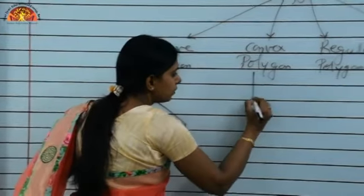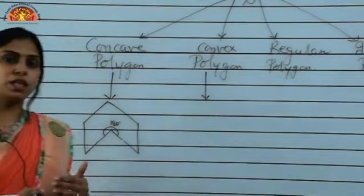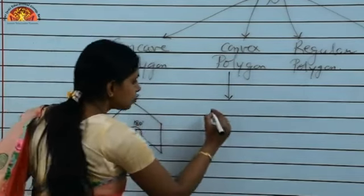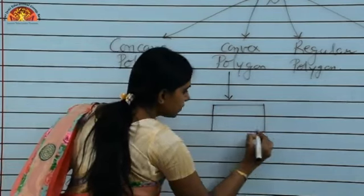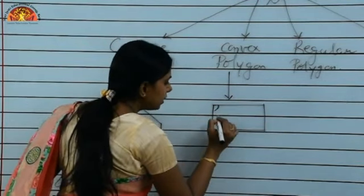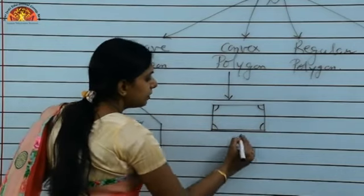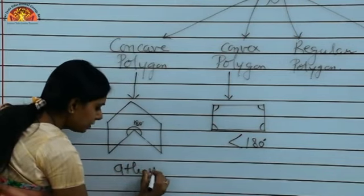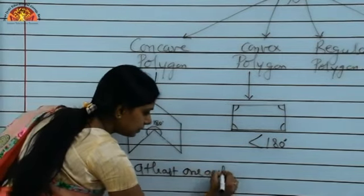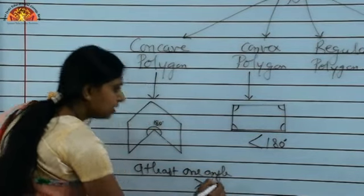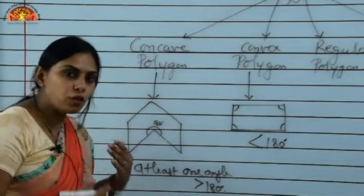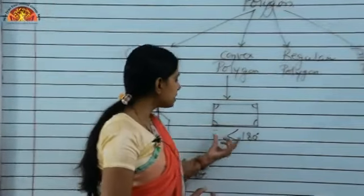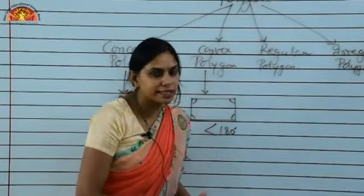Now let us come to the convex polygon. A convex polygon is a polygon in which all the angles are less than 180 degrees. In a concave polygon, at least one angle is greater than 180 degrees, whereas in a convex polygon, all angles are less than 180 degrees.